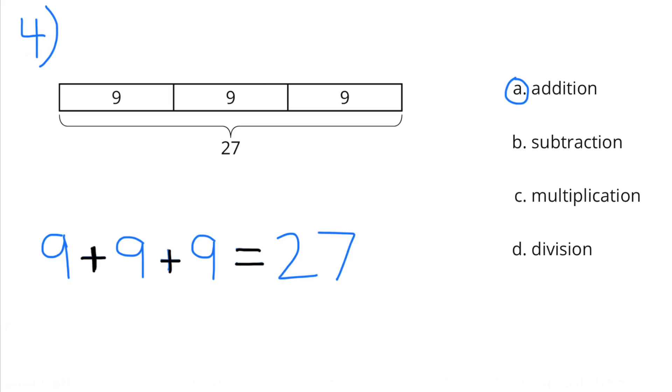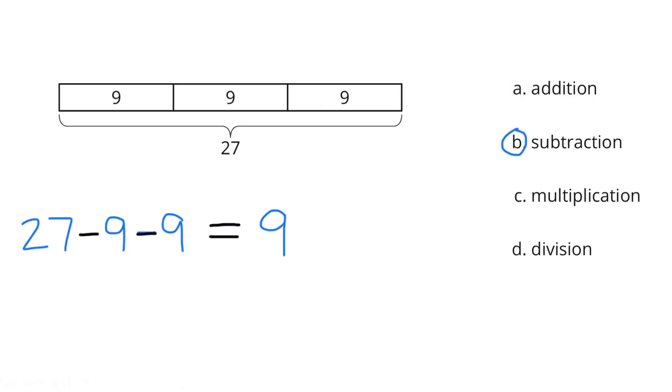Addition. 9 plus 9 plus 9 equals 27. B. Subtraction. 27 minus 9 minus 9 equals 9.